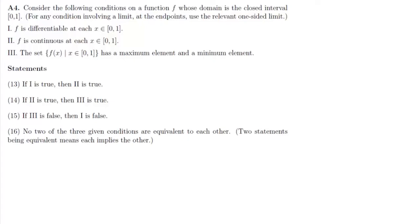Now here we are given a function f whose domain is in this closed interval 0 to 1 and we are given three conditions. First, f is differentiable at each x belongs to [0,1]. Second, f is continuous at each x belongs to [0,1]. And third, this set f(x) has a maximum element and a minimum element.